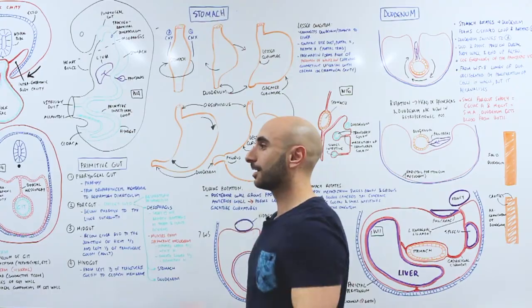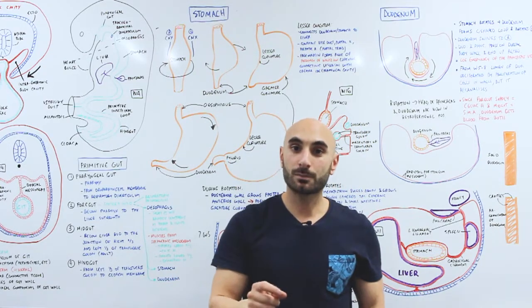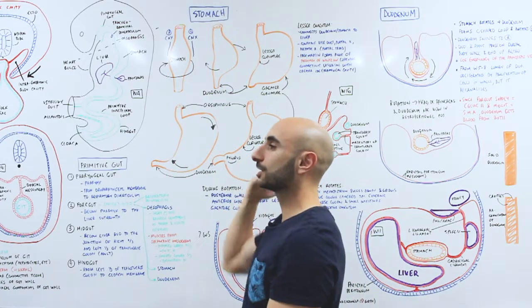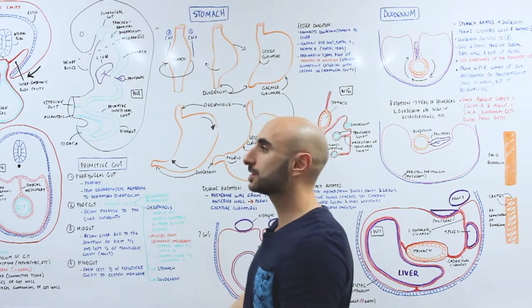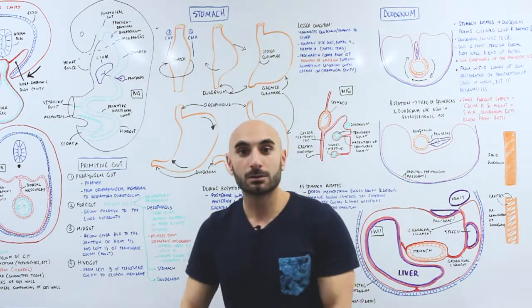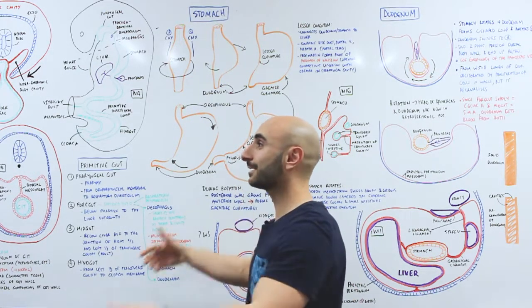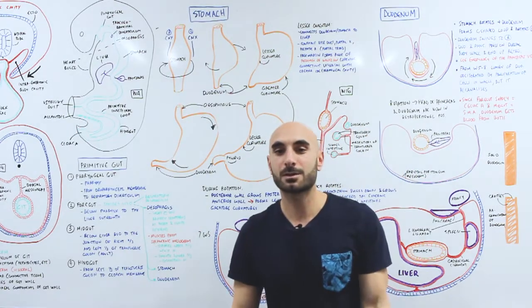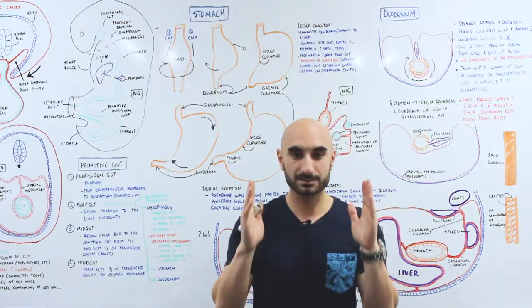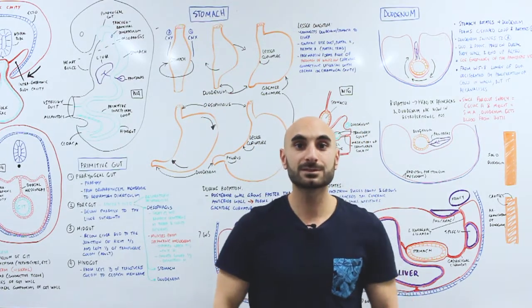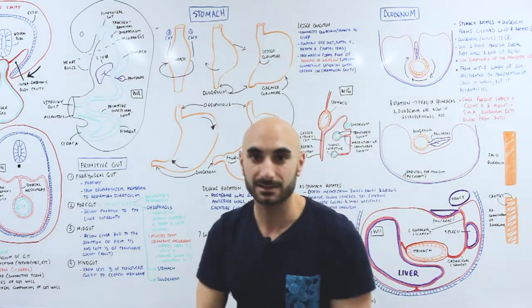Growth of the posterior aspect of the stomach leads to the development of a lesser and greater curvature. This is where the anteroposterior rotation happens. As the posterior grows, the stomach wants to lie down because it's getting heavier from the back — imagine the stomach on a hammock. So stomach rotation: one, it rotates 90 degrees so you can see the body; two, it's getting big from the back so it lies down a bit. That's the final position of the stomach.